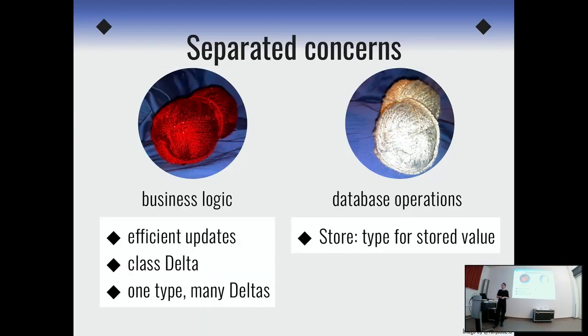All right. So this is what I wanted to demonstrate today. The separation of concerns here, for our example, business logic and database separation. And ideas that we needed on the business logic side was that it needs to have some support for efficient updates. And we can use this type class delta and these delta encodings to model them. And one idea with that type class is that it's useful to have many deltas for a single base type. And the other one is on the database side, we have this idea of a store that stores a single Haskell value of a single type. Questions?